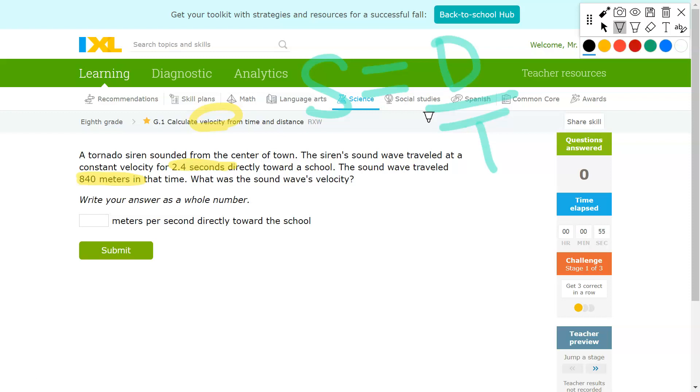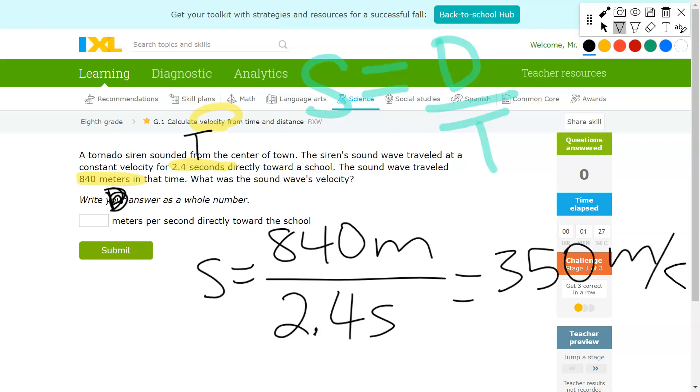To solve for speed, you put distance on top, which is 840 meters. That's D. This is T. Shorthand for meters is M. Divide that by 2.4 seconds, shorthand S. Your answer would then be 350 meters per second. And that's what we'll put down as our answer in the box right there.